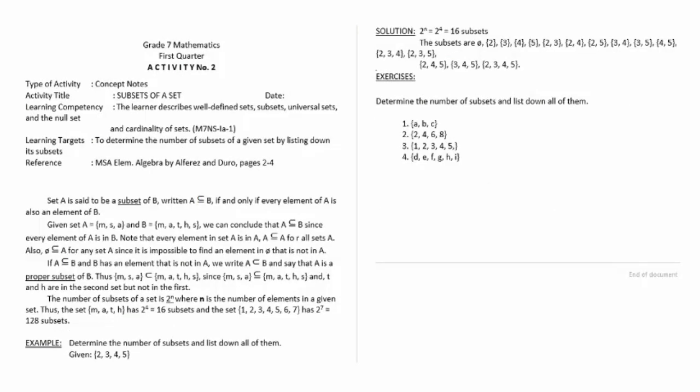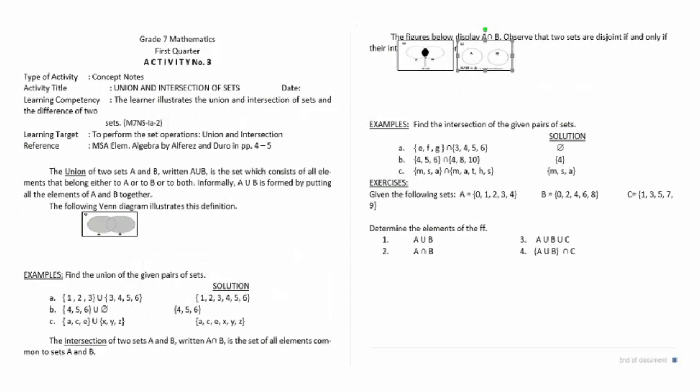Activity number two covers subsets of a set. Activity number three is union and intersection of sets. Activity number four is complement and difference of sets.